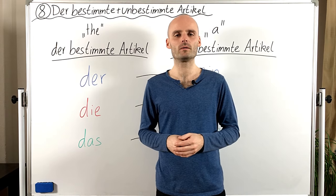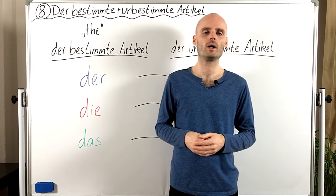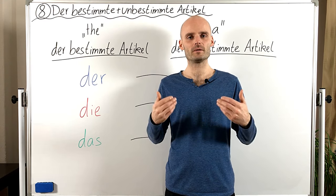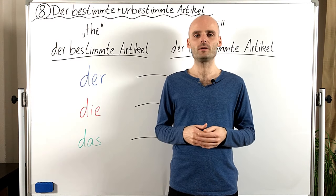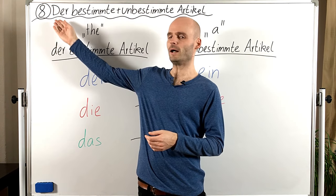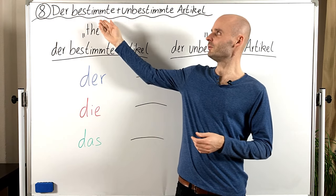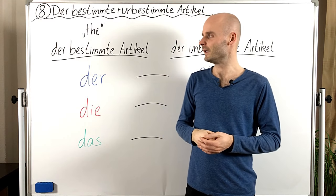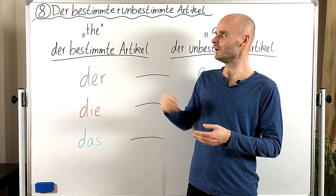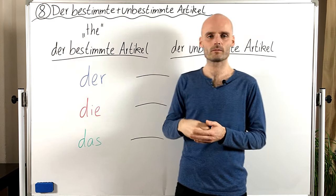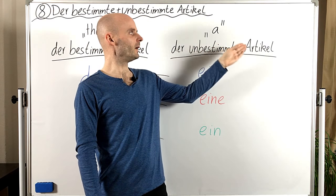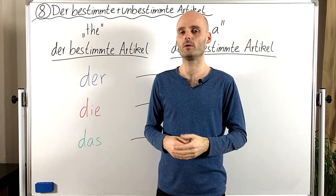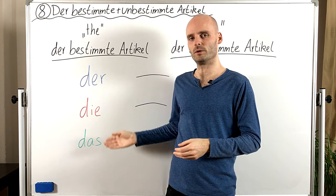Hallo Leute und herzlich willkommen zu einer neuen Folge Easy German mit Benjamin. Wir sind heute bei Lektion 8, der bestimmte und unbestimmte Artikel. Der bestimmte Artikel auf Englisch 'the' und der unbestimmte Artikel auf Englisch 'a'. Und auf Deutsch haben wir drei Optionen.